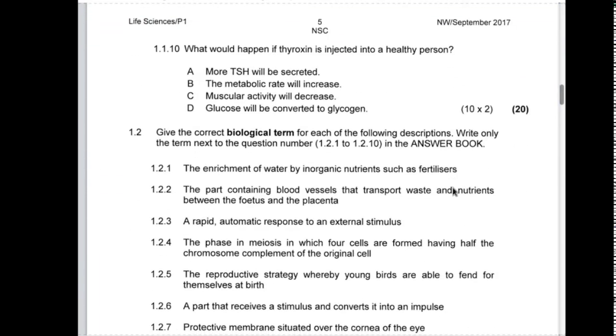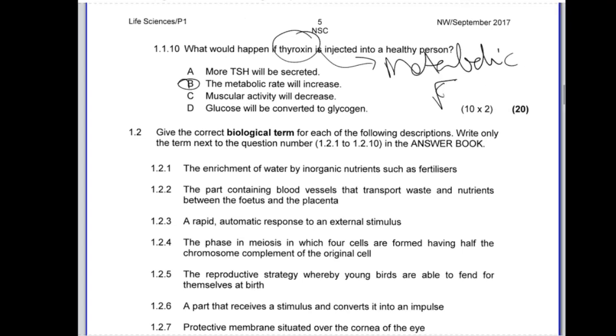1.1.10: what would happen if thyroxine is injected into a healthy person? Thyroxine controls your metabolic rate. B is the correct answer because thyroxine controls the metabolic rate. If we take a look at that, then the metabolic rate will be increased if thyroxine is injected. Let me go through each of these and tell you why not A, C, or D.